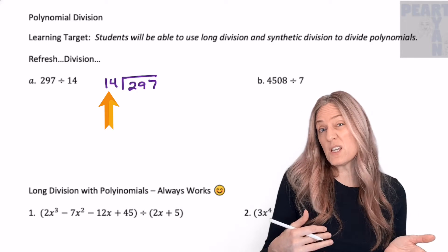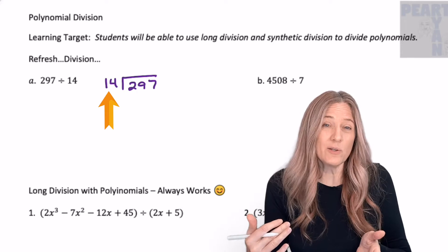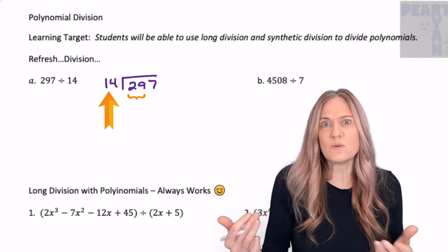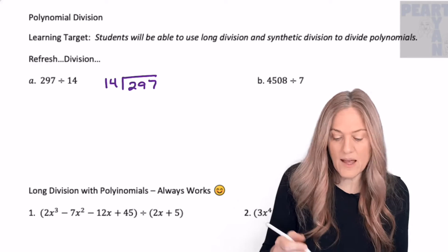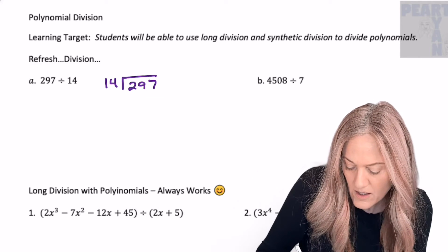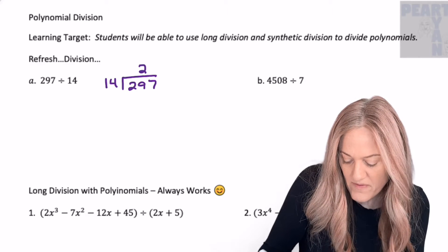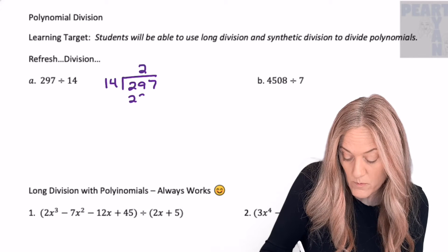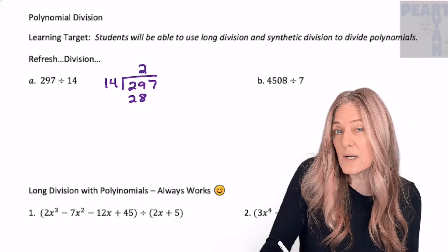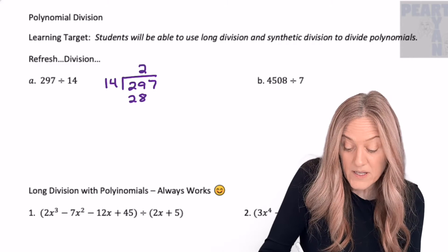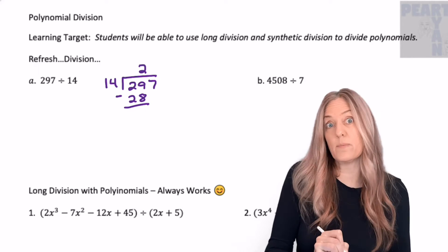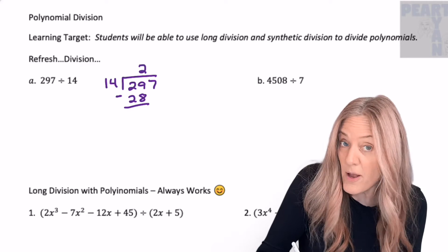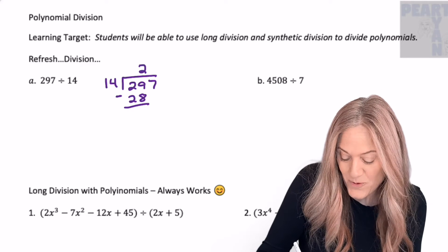We say 14 goes into 29 how many times? 14 times 2 is 28. Put the 2 above that 9, and then 2 times 14 is 28. We write it under the 29, and then we subtract. Subtract — 28 from 29 is 1.